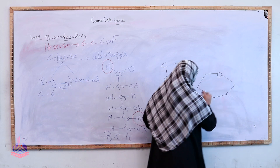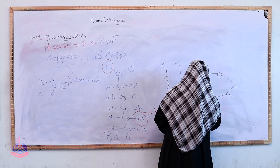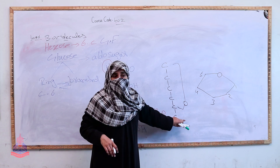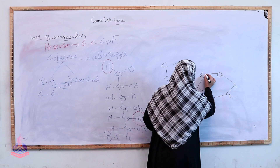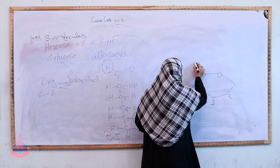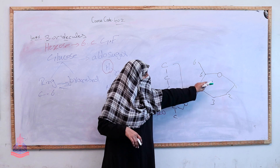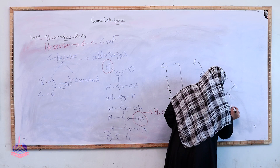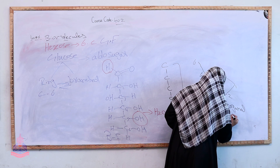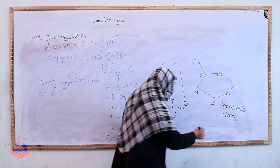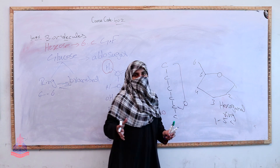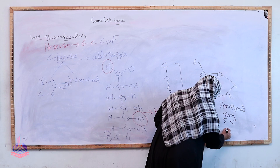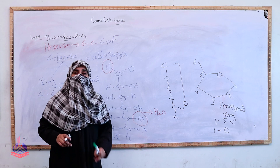When we count carbons 1 through 5, the fifth carbon has an extending arm. When water molecules are eliminated — the hydrogen from the first carbon and the hydroxyl group from the fifth carbon combine to form a water molecule — the branched form converts to ring form. The ring is formed between the first and fifth carbon, with an oxygen atom bridging between them.